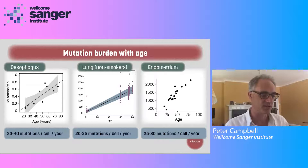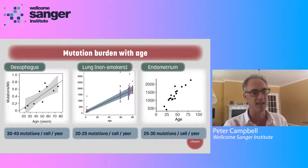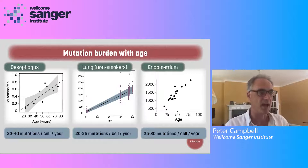The lowest rates are in blood and testis — in blood, about 15 mutations a year. The highest rate we've seen is in colon, more like 30 to 40 mutations a year per cell. Essentially every cell in our bodies is mutating at least once every week or two, which is really quite striking. From the point of view of reconstructing clonal dynamics, this is quite useful, because those mutations are essentially marking each cell every few weeks, enabling quite high resolution inferences about the patterns of cell turnover over life.